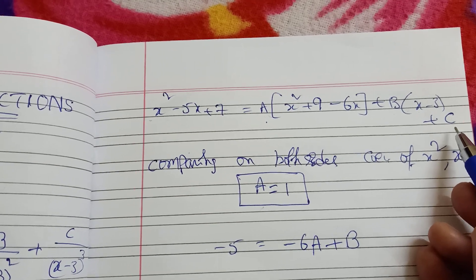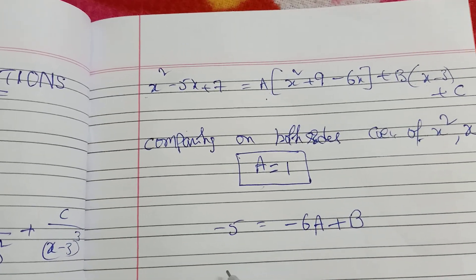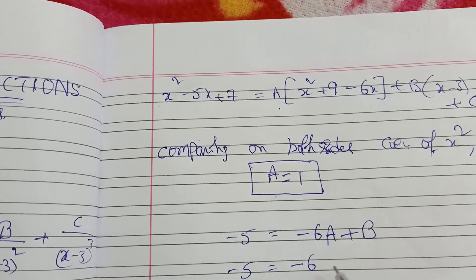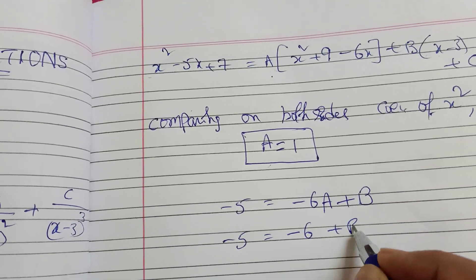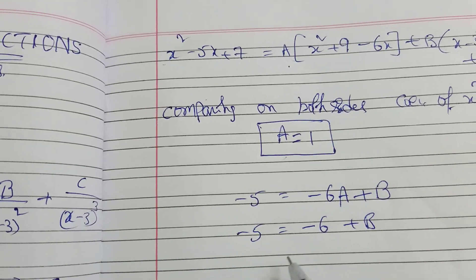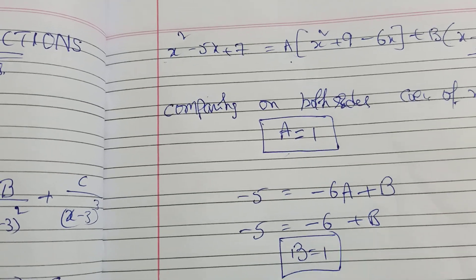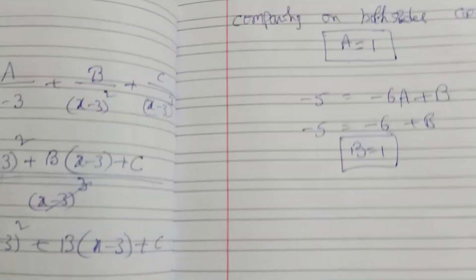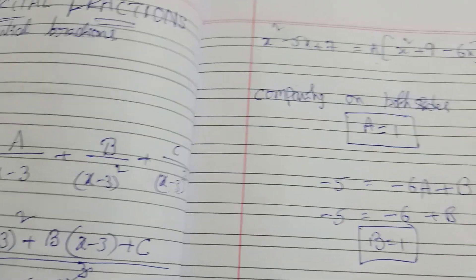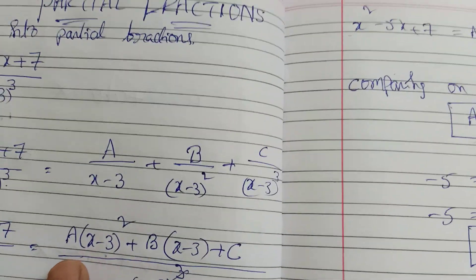Since A equals 1: minus 5 equals minus 6 plus B, so B equals minus 5 plus 6 equals 1. Therefore A equals 1, B equals 1, C equals 1.